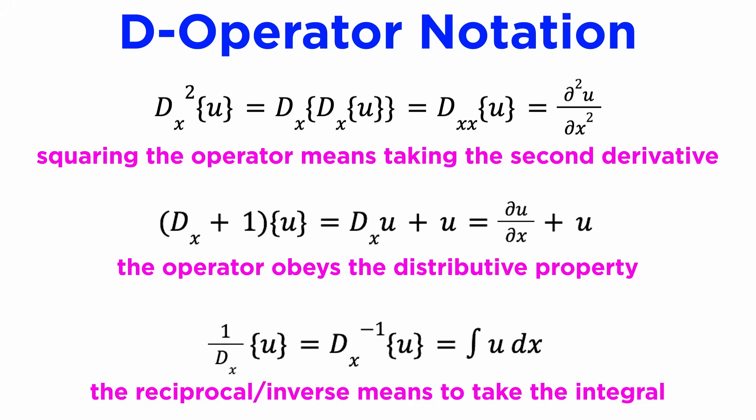Basically, D operator notation is a way of writing the act of taking a derivative like a variable by itself, and this D variable obeys all the rules of algebra that we're familiar with, but it's a neat notational trick, because we can actually write the solution of a differential equation directly using D operators.